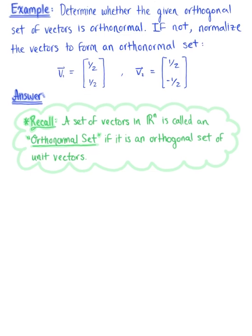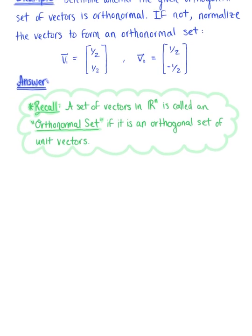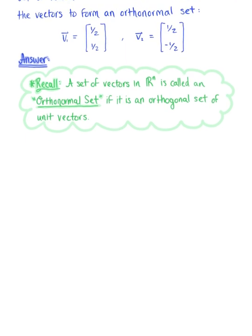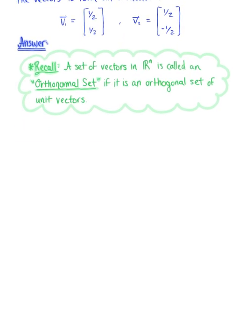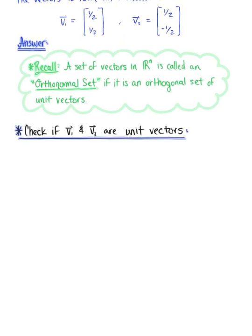In this example, we already know that these two vectors are orthogonal. So to get us started, we need to check if these vectors are unit vectors. Thinking about the vector v₁ first, I'm going to factor out that common scalar multiple of 1/2. So I have 1/2 times the vector with components 1, 1.